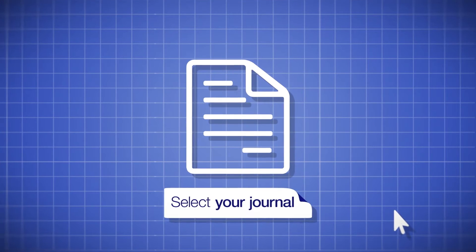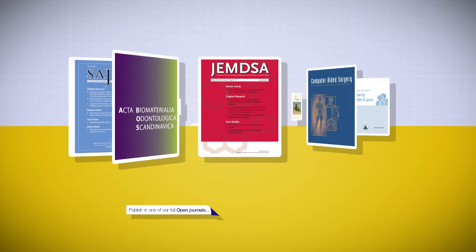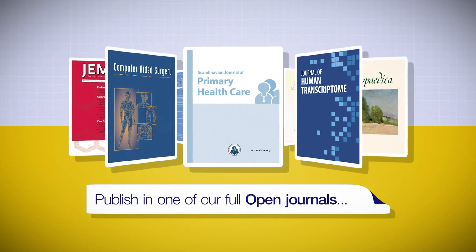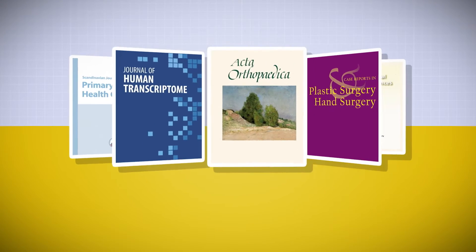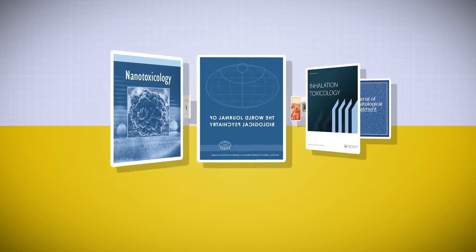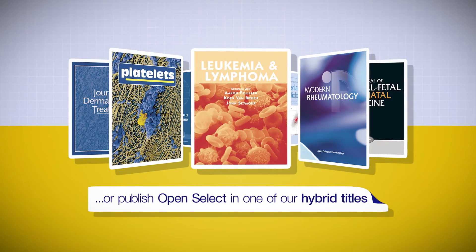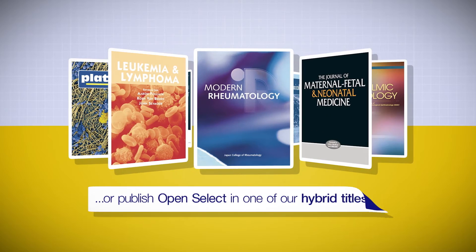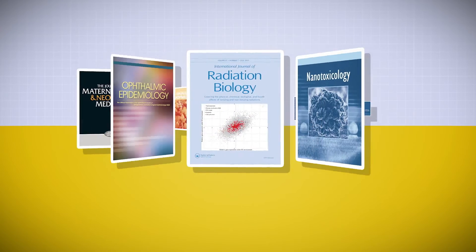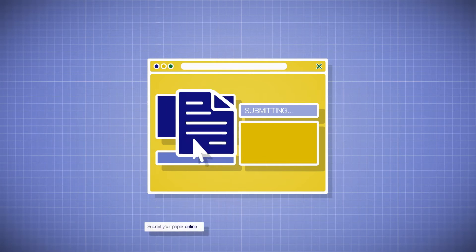Firstly, you need to select your journal. Our full open journals solely publish open access articles, whilst the open select pathway offers you the opportunity to publish your paper open access in one of our hybrid journals.